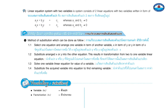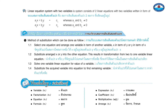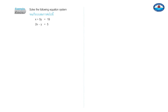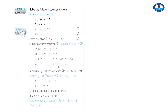Vocabulary: Variable, Factorization, Equation, Formula, Expression, Coefficient, Multiplicative, Arrange. Example — Solve the following equation system: x plus 5y equals 19 (Equation 1); 2x minus y equals 5 (Equation 2). From Equation 1: x equals 19 minus 5y (Equation 3). Substitute x into Equation 2.